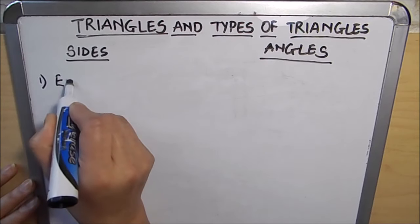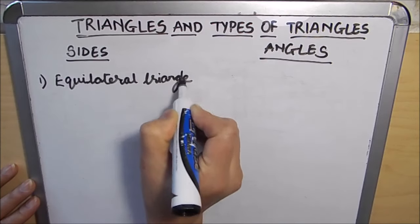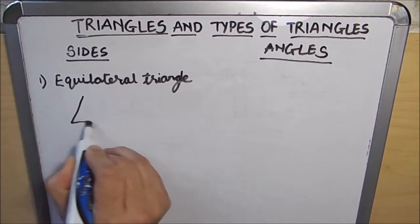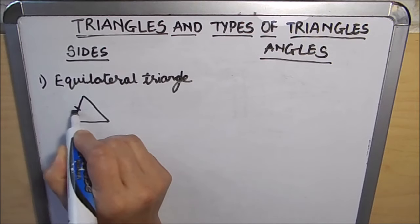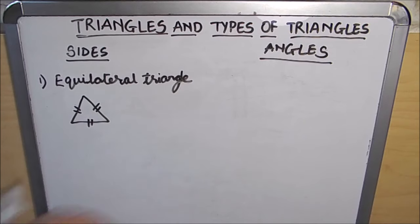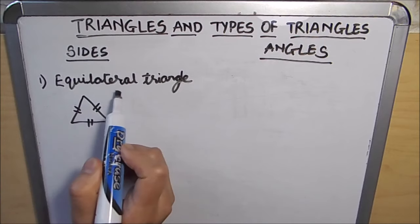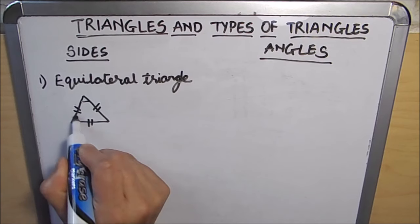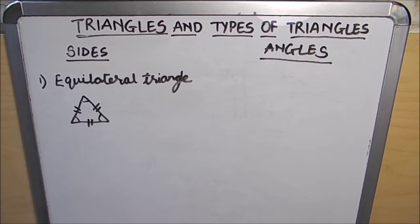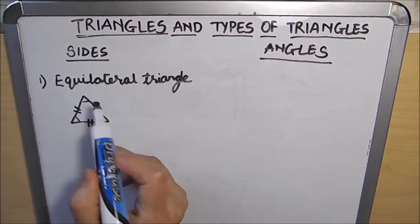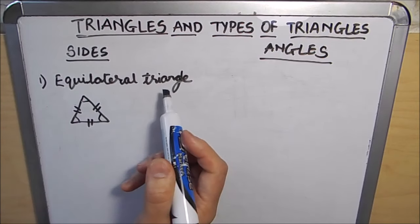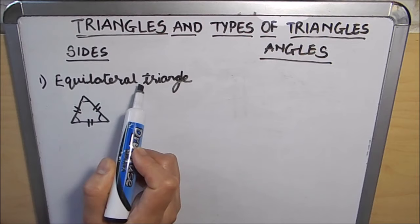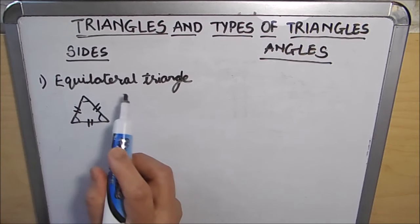The first type is the equilateral triangle. An equilateral triangle is a triangle which has all sides equal. If all three sides of a triangle are equal, all the angles will also be equal. The name itself tells us: 'equi' means same and 'lateral' means sides.